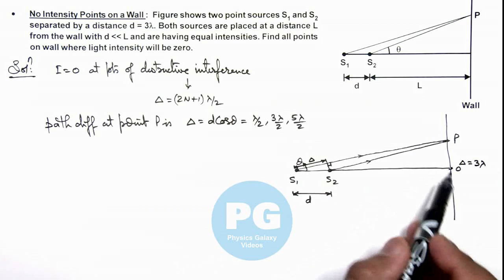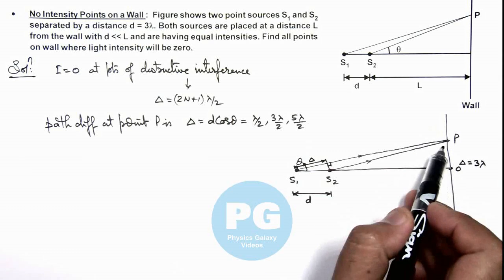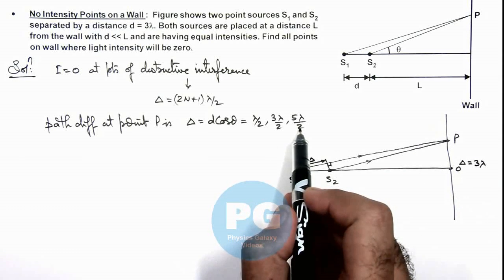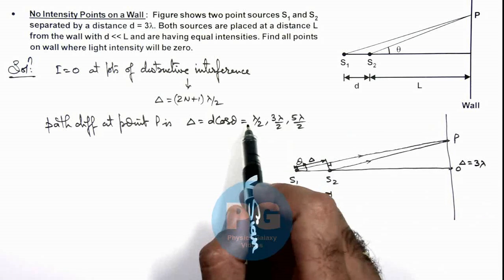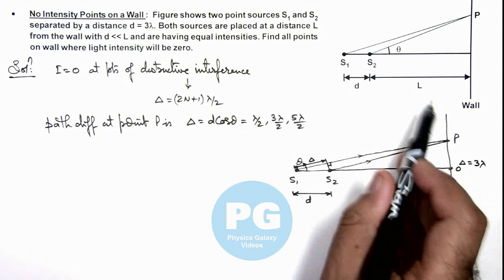As we move away from O, there will be a nearest point from O where path difference is 5λ/2, then 3λ/2, then λ/2. So there are 3 points we are getting along the line if we move away from O.